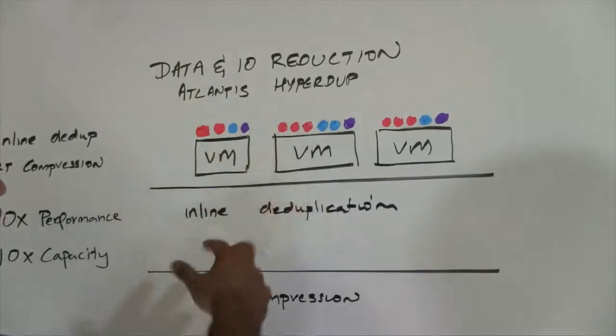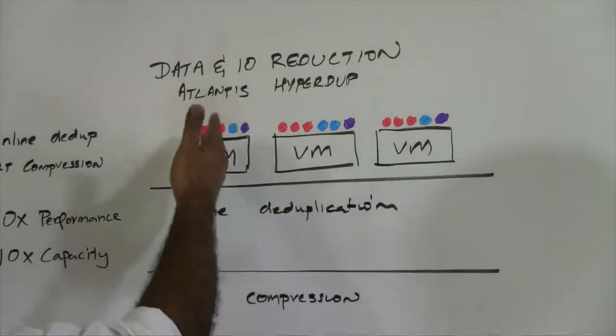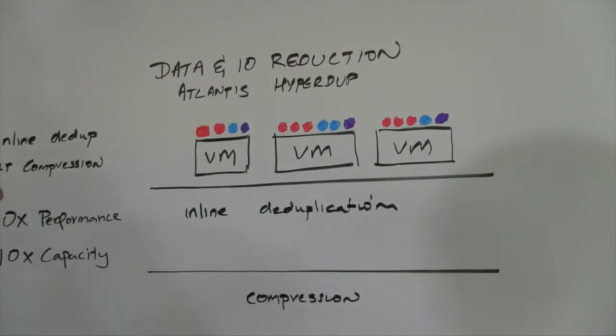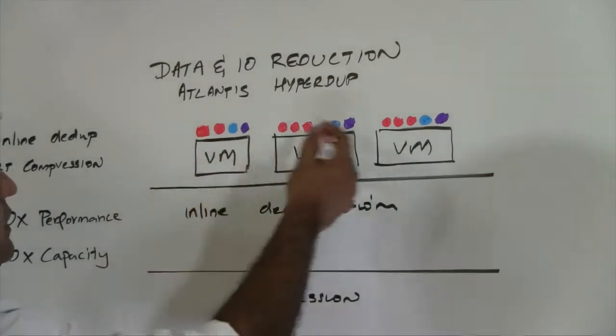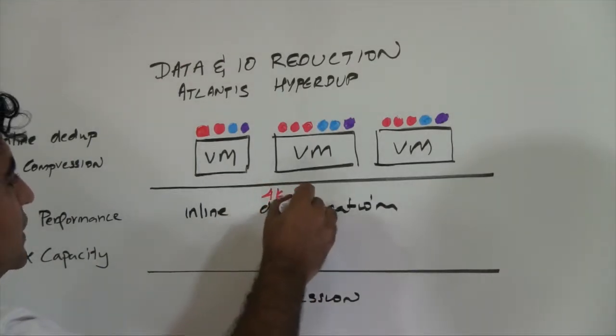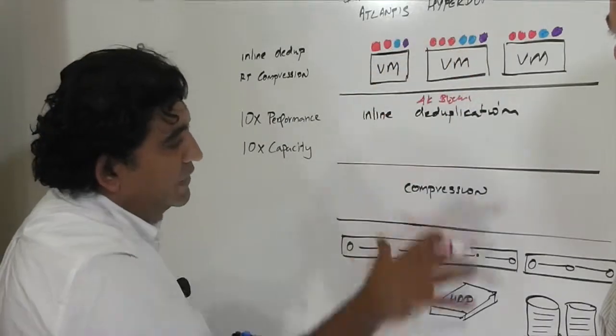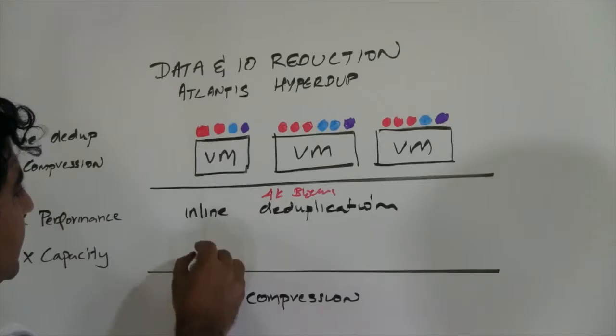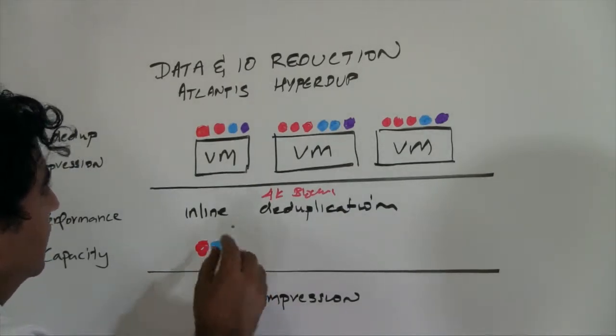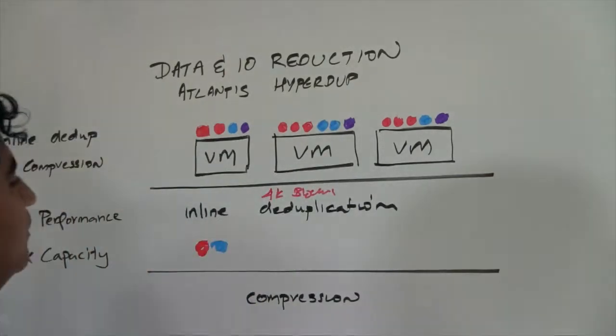The colored circles over here really show the different types of blocks that are being generated by those VMs. The color of the block dictates the content. So essentially what deduplication is doing from a capacity standpoint is it's single instancing all these blocks. It's doing this at a 4K block level. So 4K blocks come in and as a result of that, we don't really need to take everything the way it is down here. We simply single instance them down between the VMs. So you've got one red block, a blue block, and a purple block that finally end up post-deduplication.